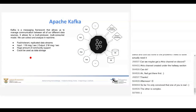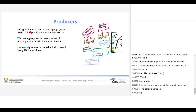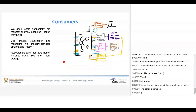Kafka can also be used as data storage. Because it is so robust as a data storage system, we can create consumers that do not have to work in real time. Using Kafka as our central messaging system, we can combine distinct data sources already existing at the lab. We can aggregate any number of auxiliary systems — for instance, slow control — with the same timestamp put into Kafka. We can scale our workload horizontally, and similarly with our consumers — we don't need a monster analysis system because we can scale horizontally. We can develop consumers for visualization and create consumers for storing raw data in Parquet format that the researchers can take home.